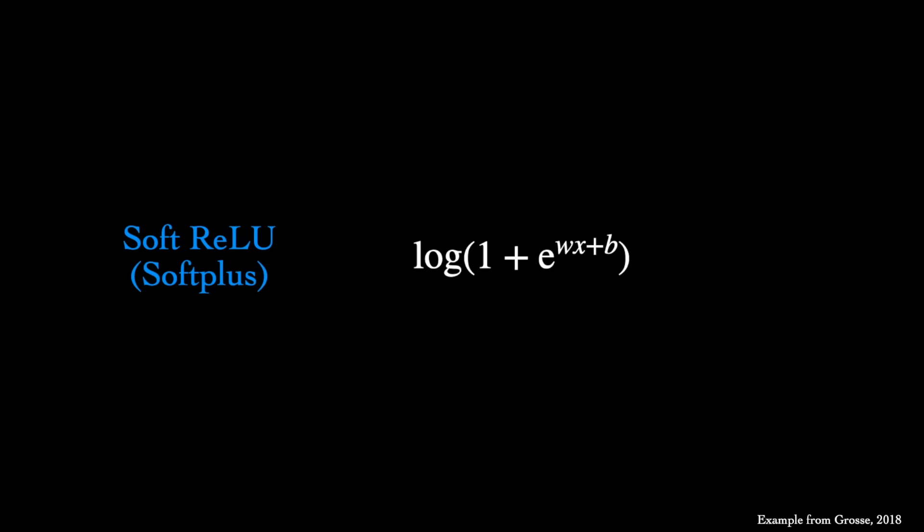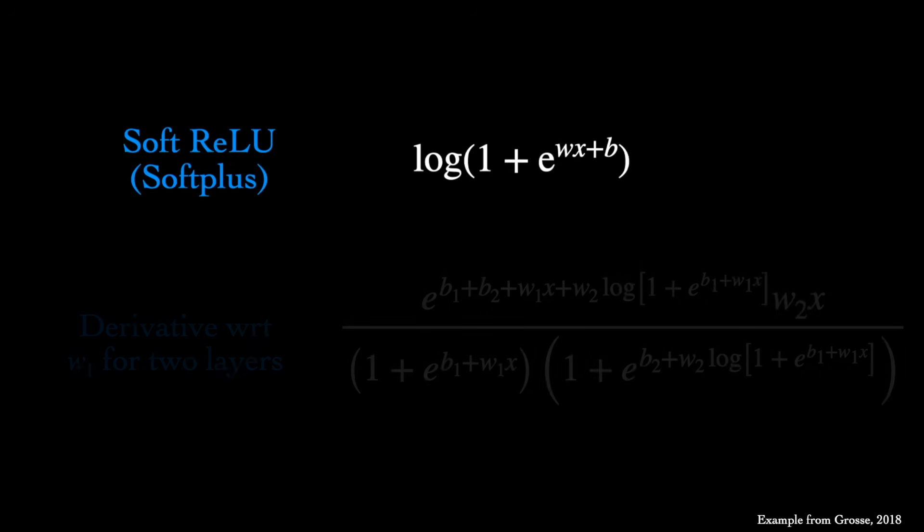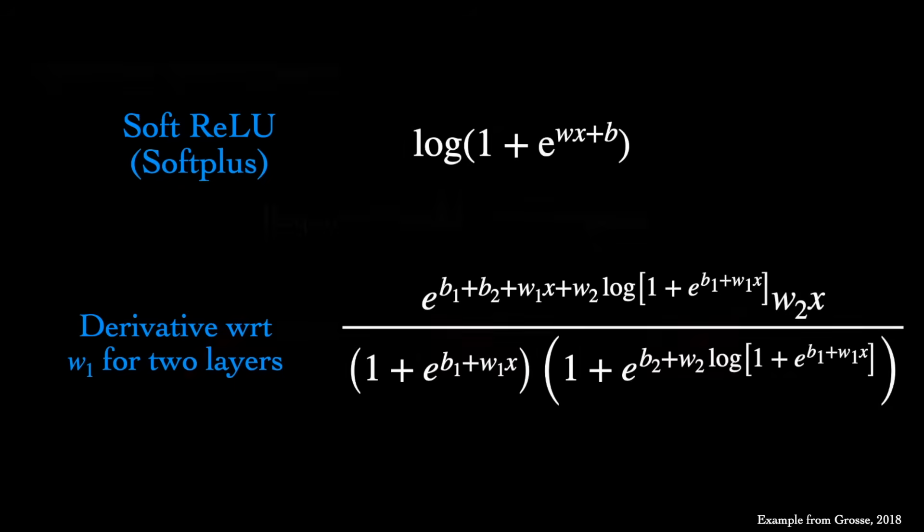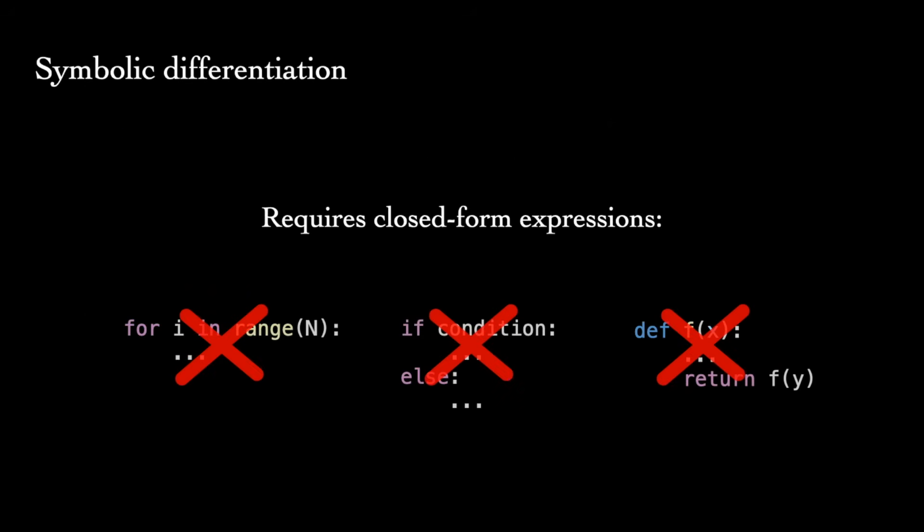Consider this function known as soft-relu, a common activation function in neural networks. Even two of these composed together leads to a fairly involved derivative. Symbolically differentiating through a network of many layers is usually not tenable. In addition, symbolic differentiation requires our function to be expressed in closed form, limiting our ability to use control flow mechanisms like conditionals, loops, and recursion.